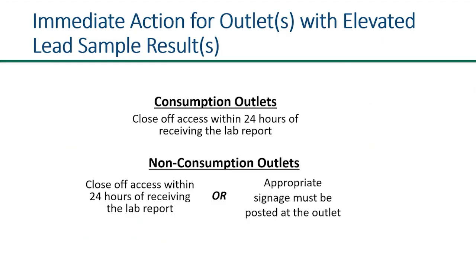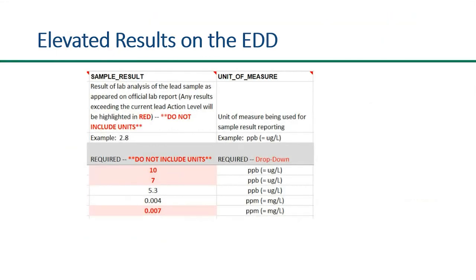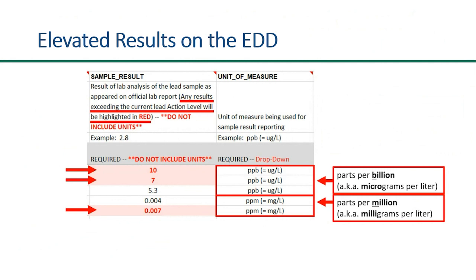For more information regarding the series of actions that will need to be taken after receiving elevated lead results, please see MDE's video titled Steps to Take After Receiving an Elevated Lead in Drinking Water Result. Please note, when entering your sample result data into the Electronic Data Deliverable Excel spreadsheet — also referred to as the EDD — any elevated lead results will be highlighted and bolded in red font. However, please make sure you select the correct units when entering the results into the EDD.